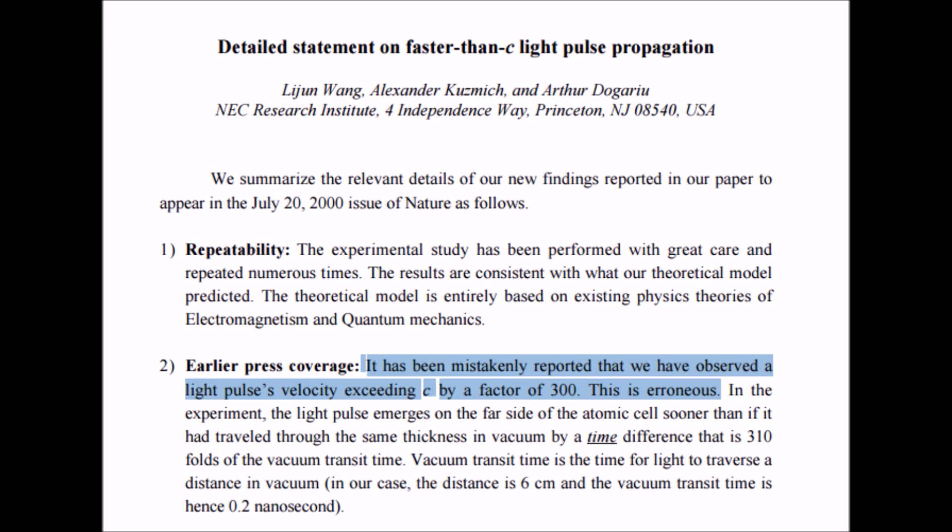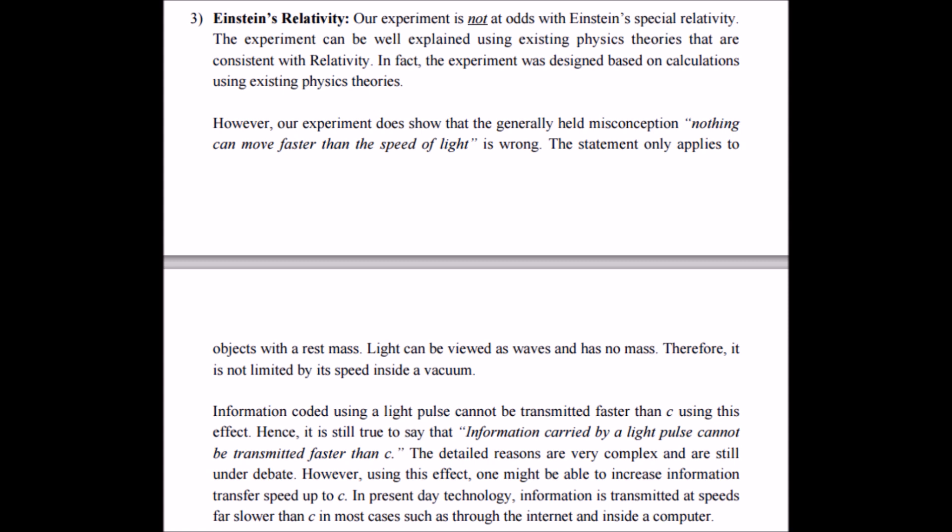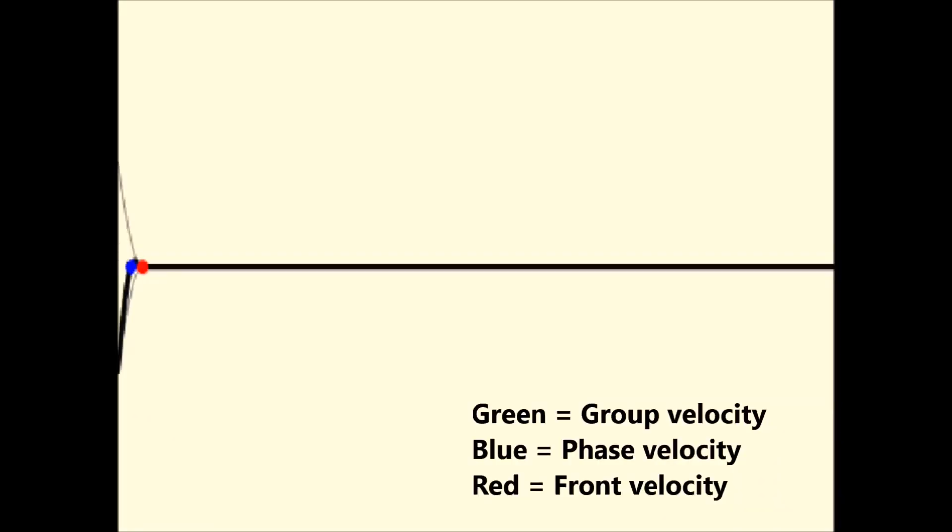Don't take my word for it. Here's a statement released by Dr. Wang, the lead author of the study. It has been mistakenly reported that we have observed a light pulse's velocity exceeding c by a factor of 300. This is erroneous. He goes on: Our experiment is not at odds with Einstein's special relativity. The experiment can be well explained using existing physics theories that are consistent with relativity. In fact, the experiment was designed based on calculations using existing physics theories. However, our experiment does show that the generally held misconception, nothing can move faster than the speed of light, is wrong. The statement only applies to objects with a rest mass. Light can be viewed as waves and has no mass, therefore it is not limited by its speed inside of a vacuum. Information coding using a light pulse cannot be transmitted faster than c using this effect. Hence, it is still true to say that information carried by a light pulse cannot be transmitted faster than c.